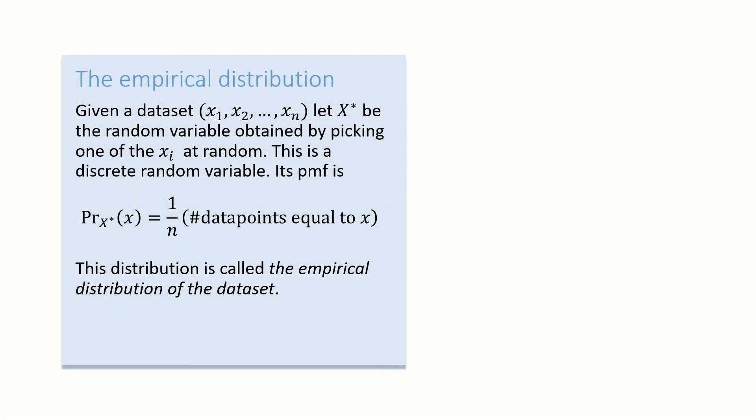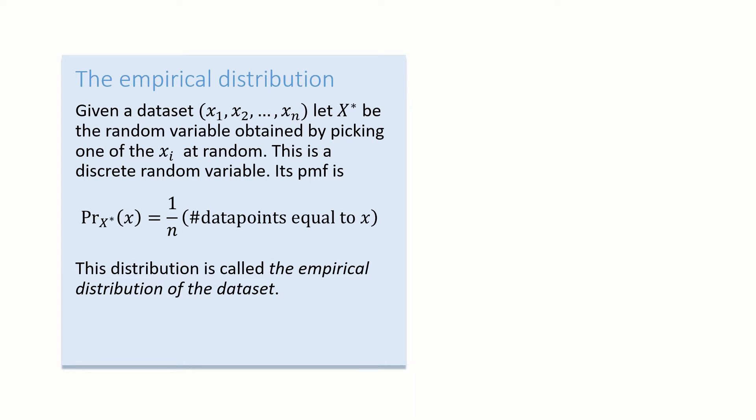First, let's recap the idea of an empirical distribution. If you have a dataset and you pick one of the items at random, all items equally likely, and call this random item x star, then this is called the empirical distribution. It's a discrete random variable, of course, because there are only n possible values it can take, fewer if the dataset has duplicates, and the probability mass function is just this formula here.